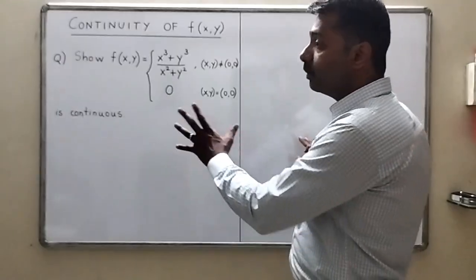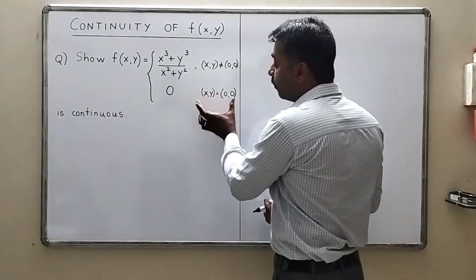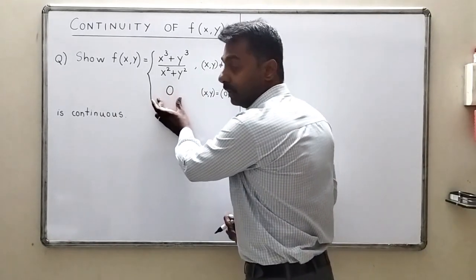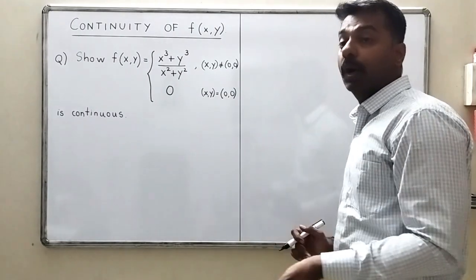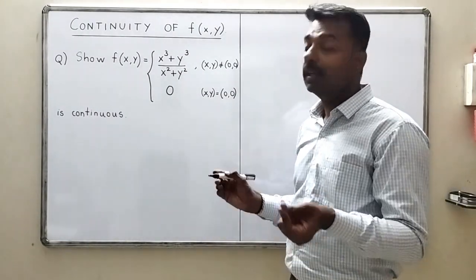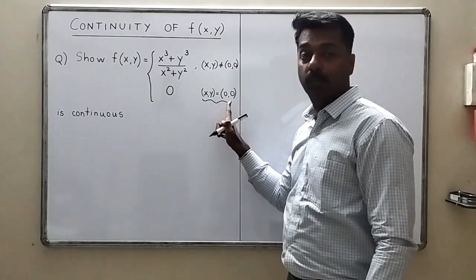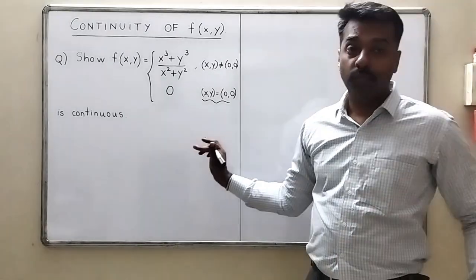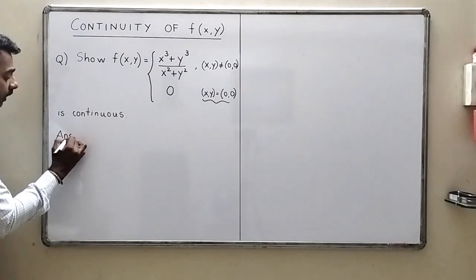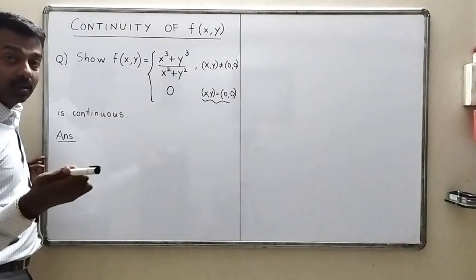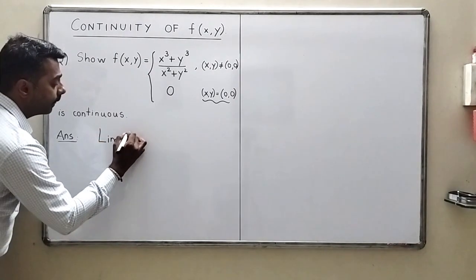When we see such a question, we should first see at which point there is a difference in the function. At the point zero zero the function is defined differently, and whenever the point is not zero zero the function is defined differently. So we have to discuss the continuity at the point zero zero.